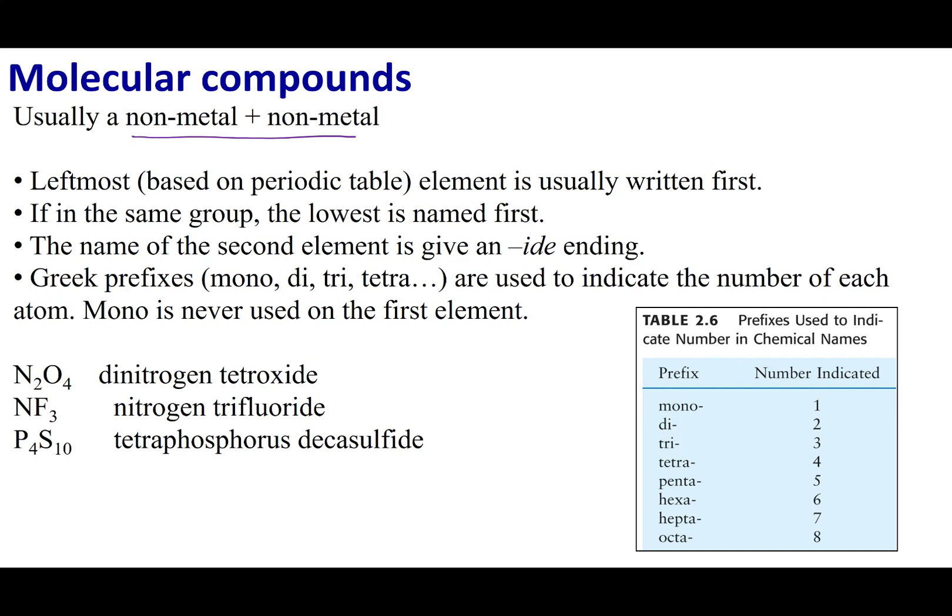Now the way you're going to name this is you are going to look on the periodic table. We're going to start with the atom that is leftmost on the periodic table. If it is in the same group or in the same column, you're going to start with the lowest. Now I'm going to give you a hint with these two things. In general, the molecular formula is going to follow these rules. There are some exceptions out there, but they're few and far between.